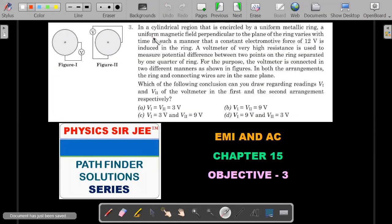Let's go to the second question. In a cylindrical region that is encircled by a uniform metallic ring, a uniform magnetic field perpendicular to the plane of the ring varies with time in such a manner that a constant electromotive force of 12 volt is induced in the ring. So there is a time varying magnetic field which induces an EMF in this circular metal ring that is there in both Figure 1 and Figure 2. The value of that induced EMF is 12 volt. A voltmeter of very high resistance is used to measure potential difference between the two points on the ring separated by one quarter of the ring.